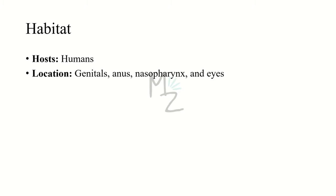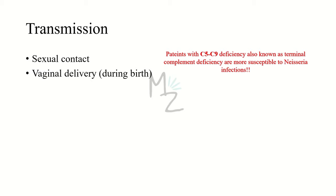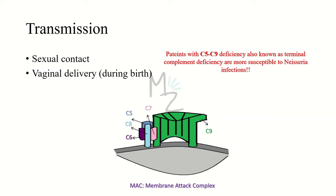Humans are the only hosts for Neisseria gonorrhea. They inhabit different organs, specifically the genitals, but can also be found in the anorectal region, nasopharynx, and eyes. Neisseria gonorrhea is usually transmitted sexually, and newborns can be infected during birth. A key risk factor is patients with C5 to C9 deficiency — also known as terminal complement deficiency — who are more susceptible to Neisseria infections. C5 to C9 proteins are responsible for forming the MAC (membrane attack complex), which causes bacterial lysis. When there is a deficiency, MAC is not formed and patients are more susceptible.